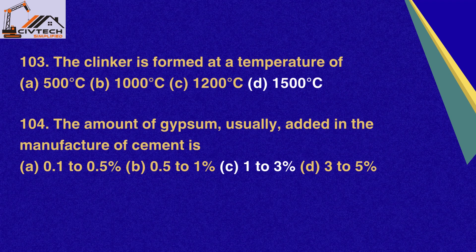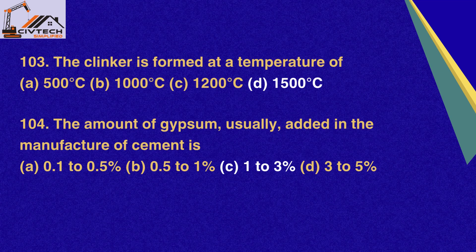Question 103. The clinker is formed at a temperature of: A. 500°C, B. 1,000°C, C. 1,200°C, D. 1,500°C. Correct option D: 1,500°C. Question 104. The amount of gypsum usually added in the manufacture of cement is: A. 0.1–0.5%, B. 0.5–1%, C. 1–3%, D. 3–5%. Correct option C: 1–3%.